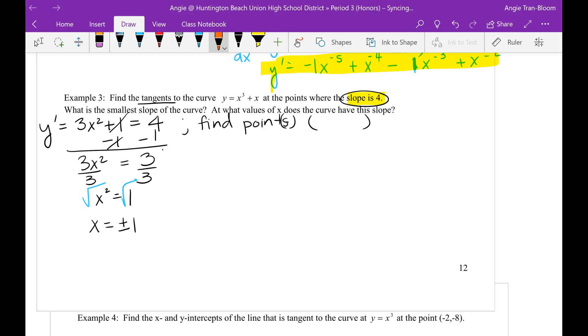So let's look for the points. When x equals to 1, I'm now going to plug it back to here. That means y equals 1 to the third plus 1, which is 2. So that's point number 1, 1 comma 2. Then when x equals to negative 1, that means y equals negative 1 to the third plus negative 1, which is equal to negative 2. So I have a second point, negative 1 comma negative 2.